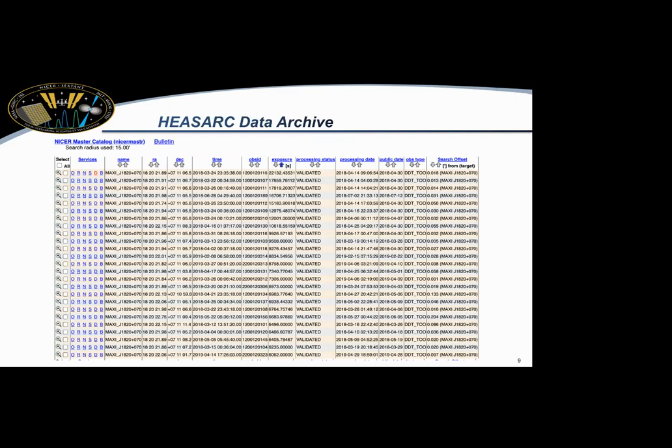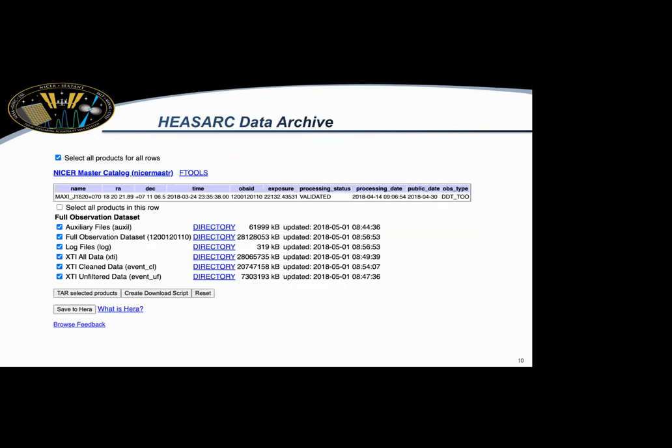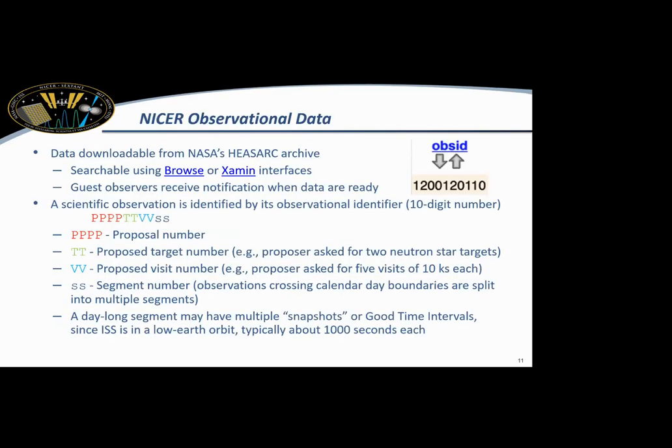If you click on this D, which is red here, it'll take you to this page, where you basically select your data products, and then you can tar the selected products and directly download them. Or you can also get a script, which is similar to wget, which Sunil showed yesterday as well. So just in case you're curious, all of the NICER data come with OBS IDs, and they're broken down like this. So first four numbers, the proposal number, then you have the proposed target number. So if somebody asked for multiple targets, it would be coded in this number. The proposed visit number, so if you're observing a target over multiple epochs. And then the second number, which is if the observations split over multiple days, this will track that.